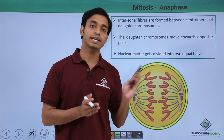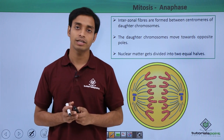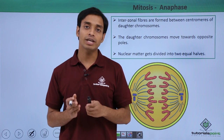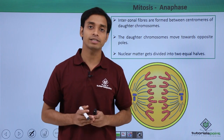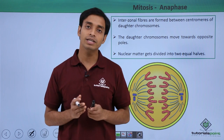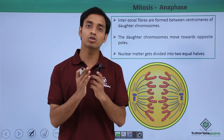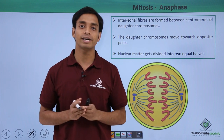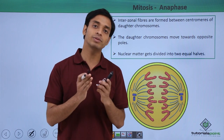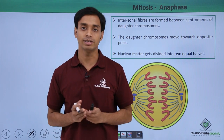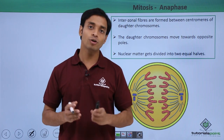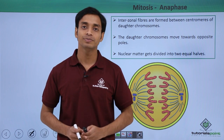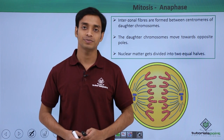In this video we have talked about the anaphase of karyokinesis, where the chromosomes split into sister chromatids and the centromeres get split. Thank you.